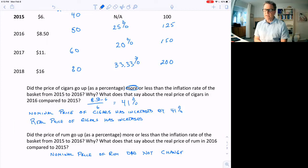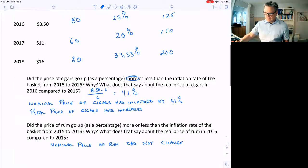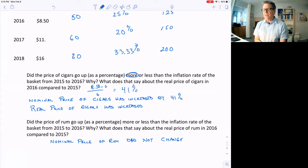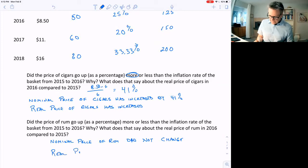But the basket went up 25%. That means the real price of rum has actually fallen because it's going up less than the overall inflation rate. So relatively, it's become cheaper.